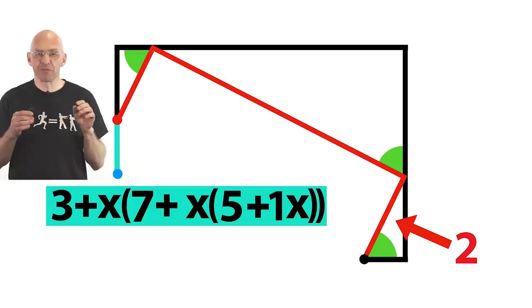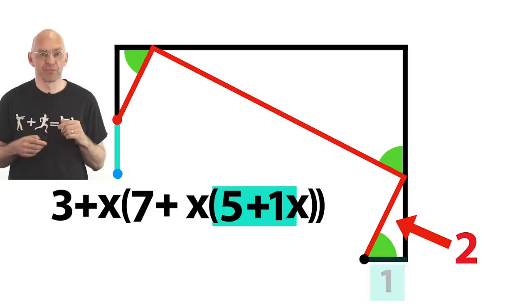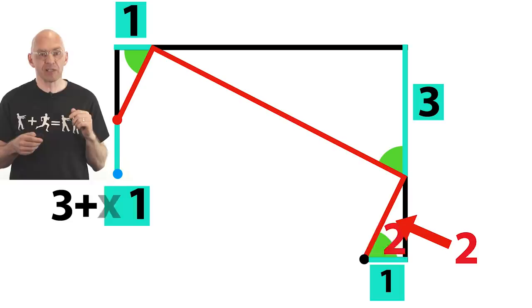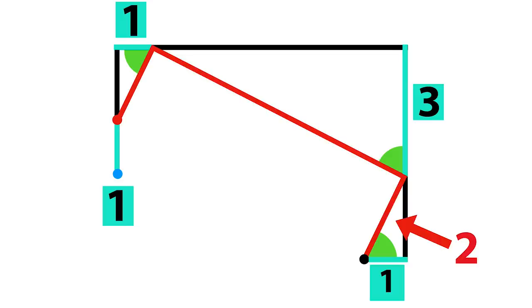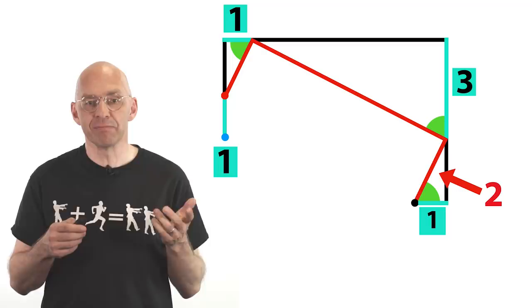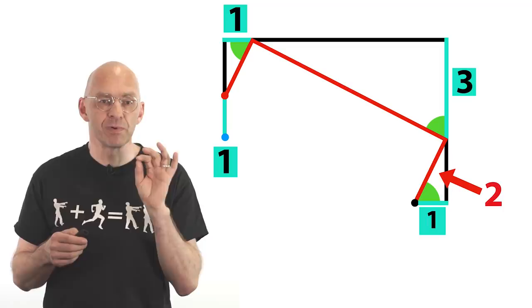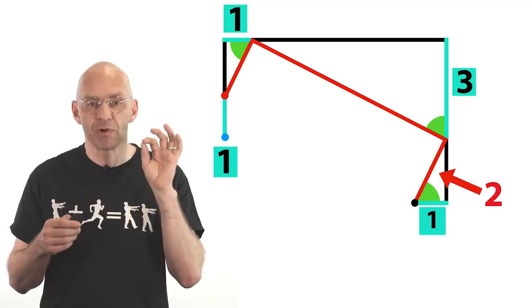In the first instance the Horner form gives a very simple and efficient way to evaluate the polynomial. Let's say we are looking at the specific value x is equal to minus 2 corresponding to an initial slope of plus 2. There. Then we evaluate the polynomial from the inside out like this. 1 times minus 2 plus 5, that's 3. Minus 2 times 3 plus 7, that's 1. And finally, minus 2 times 1 plus 3 which equals 1. So the lengths of our aqua segments are just the intermediate results of this super efficient way of evaluating the polynomial.